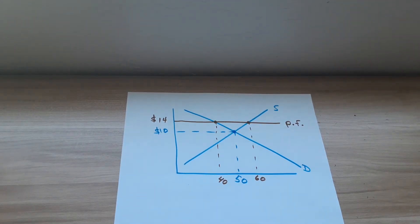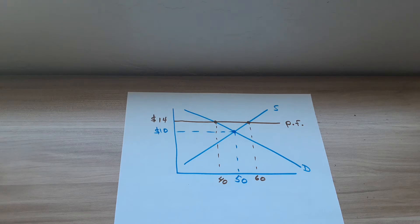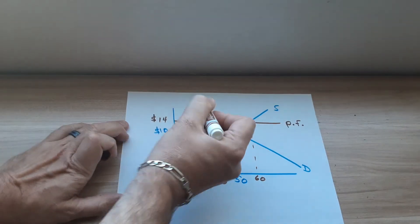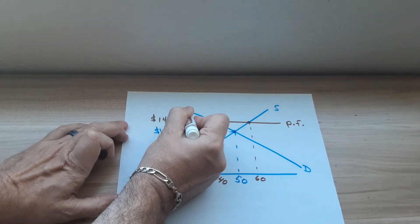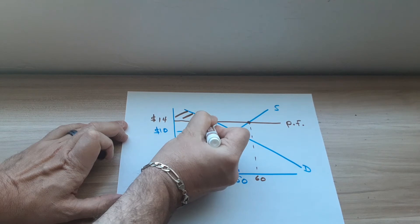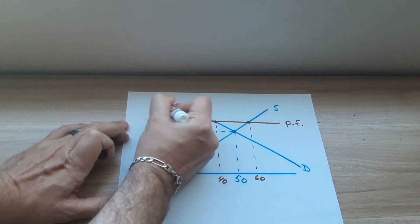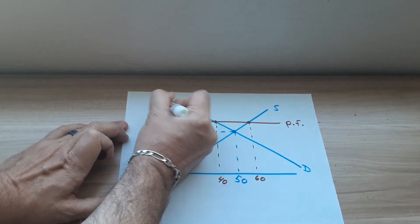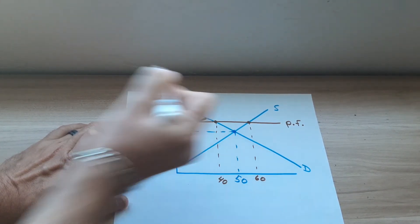So where is the consumer surplus? You find consumer surplus below the demand curve, but above the price. Below demand but above the price is your consumer surplus. So here, it would be this area right here that I'm lining in. There is your consumer surplus.